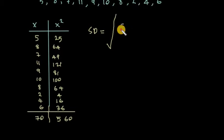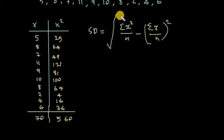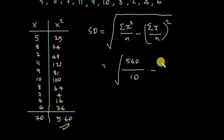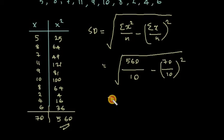Applying the formula: standard deviation equals the square root of (sigma x² divided by n) minus (sigma x divided by n) all squared. So we get root of (560 divided by 10) minus (70 divided by 10) all squared, which equals root 7, which equals 2.646.